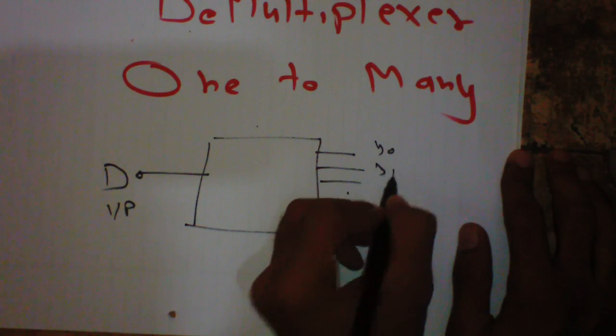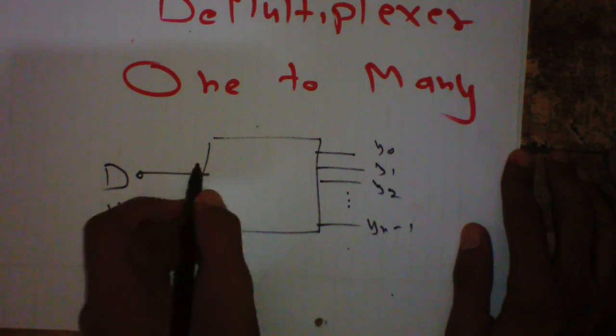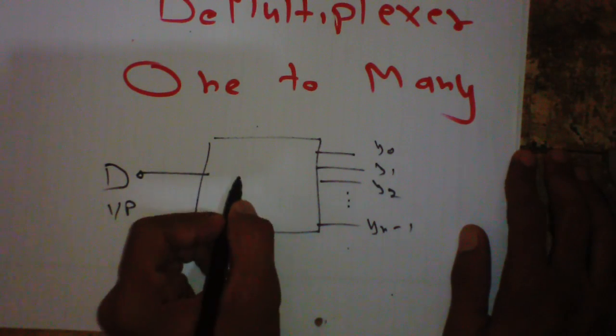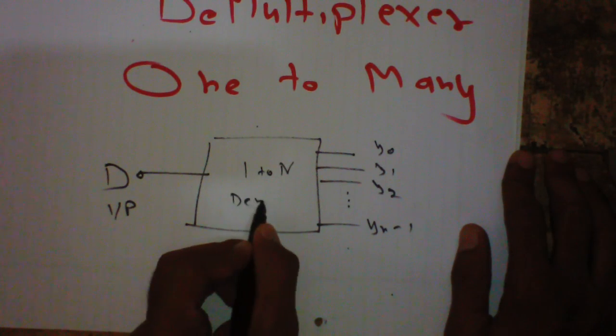Y0, Y1, Y2, and Yn-1. So this is 1 to n demultiplexer.